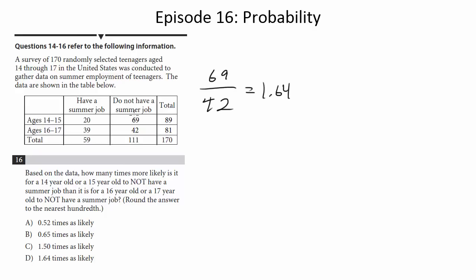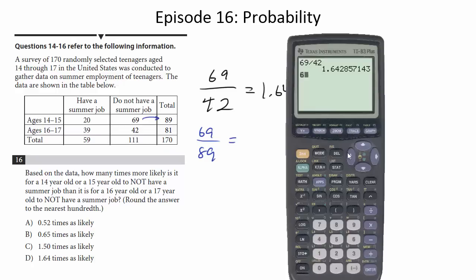So this is just going to show that you cannot compare the raw numbers. You first have to find the fraction, the probability, the percentage of these groups that don't have summer jobs, and then compare those. So let's do that. The fraction of the 14- to 15-year-olds who don't have a summer job is 69 divided by 89. So that's 0.775.